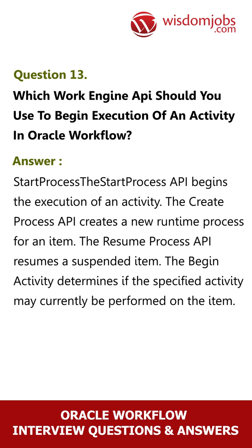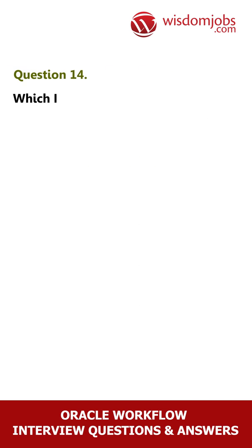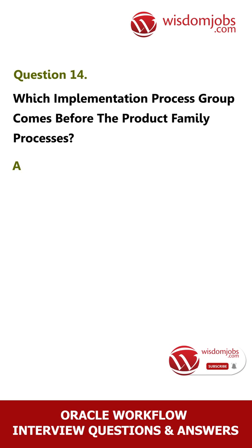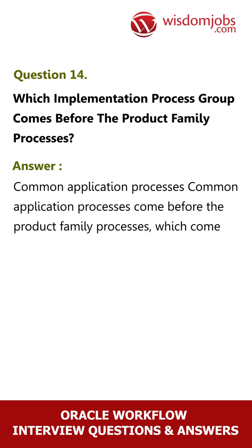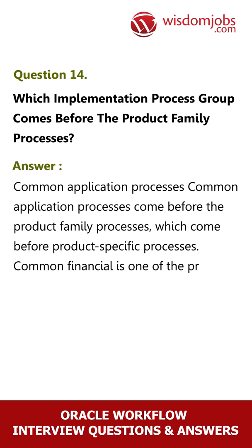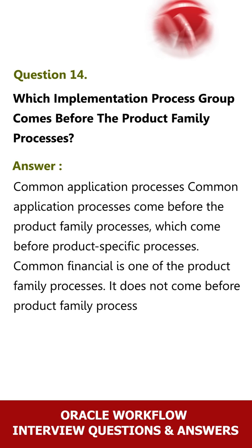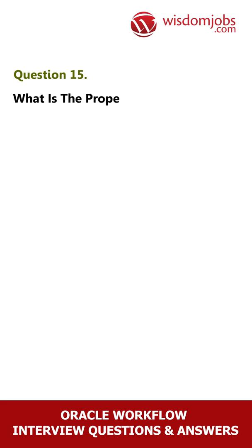Question 14: Which implementation process group comes before the product family processes? Answer: Common Application Processes. Common Application Processes come before the product family processes, which come before product-specific processes. Common Financial is one of the product family processes; it does not come before product family processes.